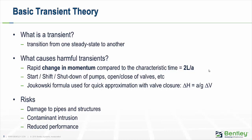What causes a harmful transient? It's any time you have a rapid change in momentum compared to the characteristic time, which equals two times the length of your system divided by the wave speed — essentially how long a wave takes to travel from one end of the system and back. Things like starting or shutting down pumps too quickly, opening and closing valves or hydrants too quickly can cause severe changes in hydraulic grade — both positive and negative pressure surges. The Joukowsky equation gives a quick approximation of the magnitude of that head change, though it's a rule of thumb that doesn't account for the complexities HAMMER can handle.